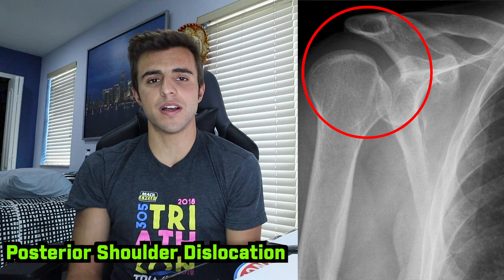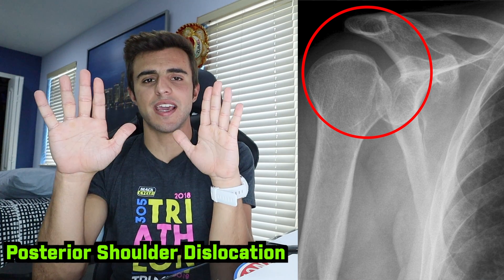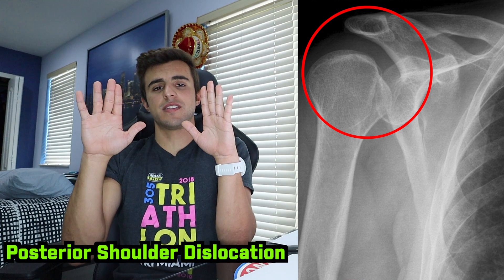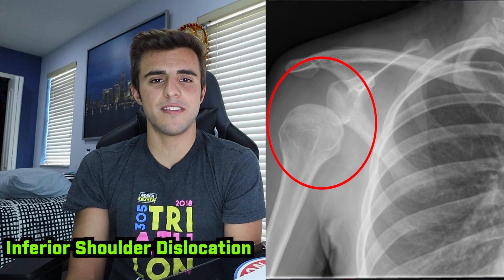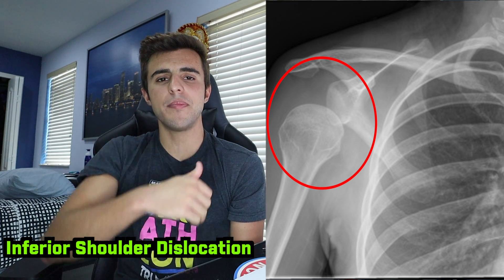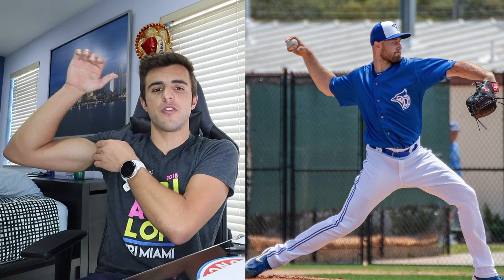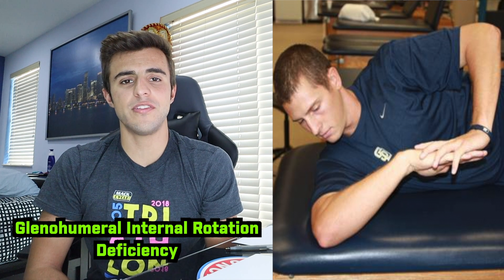The next type of dislocation is a posterior dislocation. A posterior dislocation happens when your arms are flexed — like if you're an O-lineman or D-lineman — and you have a posterior force driving through the humerus and the shoulder, causing the dislocation to happen posteriorly. Then lastly, we have an inferior dislocation, which is not too common. This dislocation happens when you have your arm abducted and you have stress applied to the joint capsule.